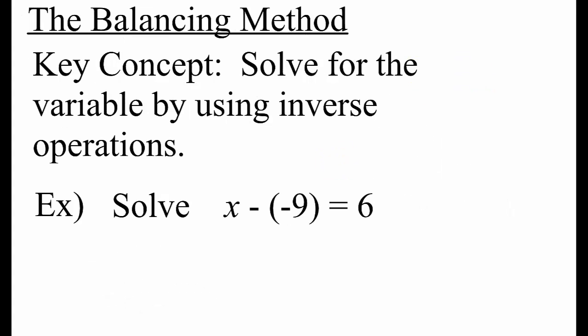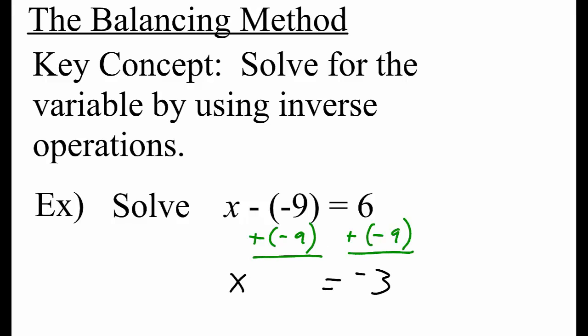The key concept when solving equations with the balancing method is to solve for the variable by using inverse operations. This one-step equation says x minus negative 9 equals 6. To undo subtracting negative 9, we add negative 9 to both sides. We get x equals negative 3.